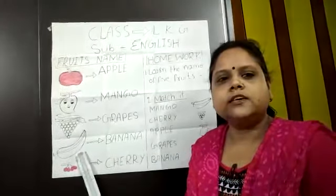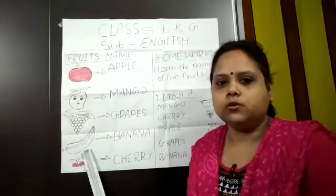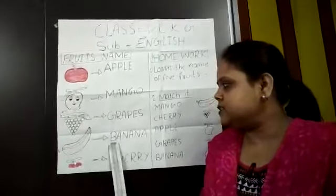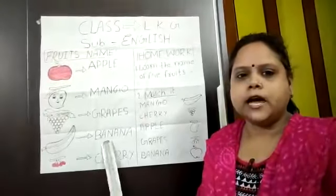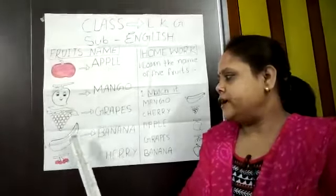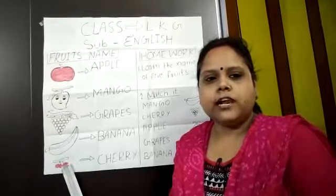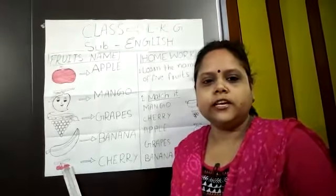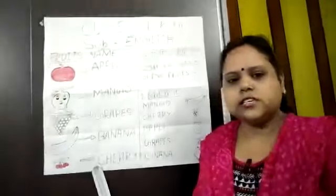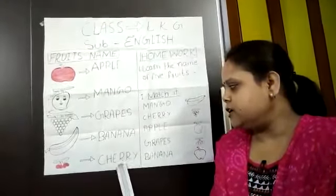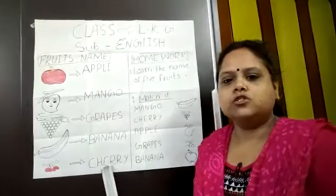Next fruit is Banana, and the color of Banana is yellow. And the spelling is B-A-N-A-N-A. Banana. And now the fifth fruit is Cherry. All of you like Cherry. And the color of Cherry is red, and the spelling is C-H-E-R-R-Y. Cherry.